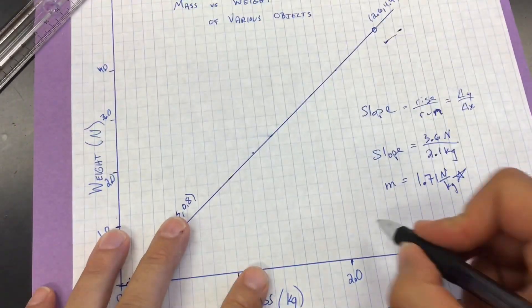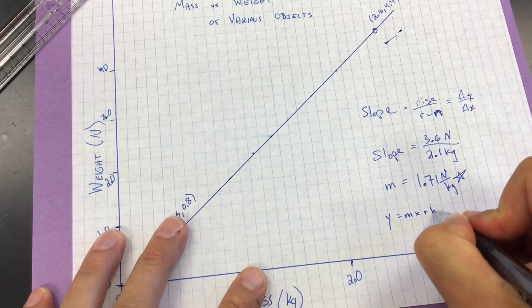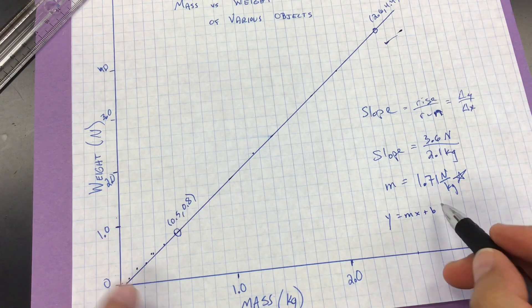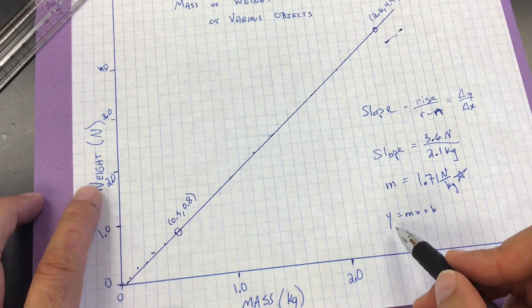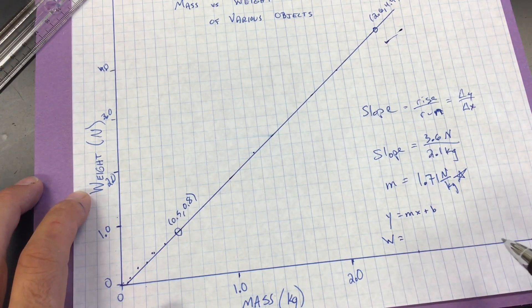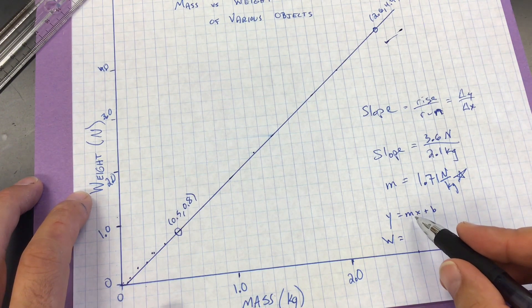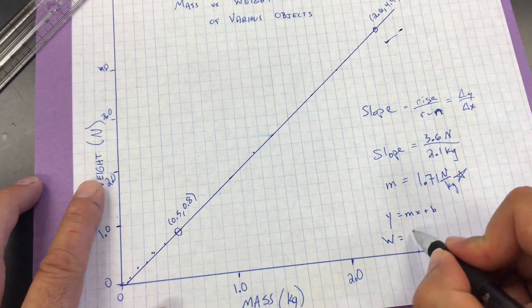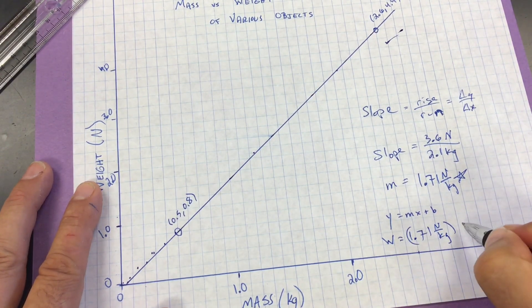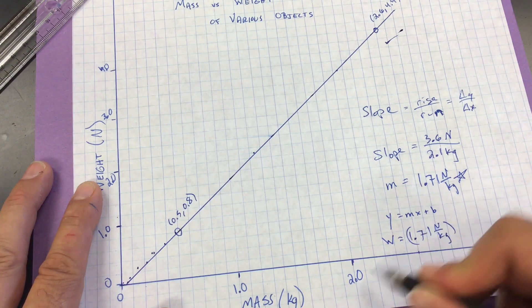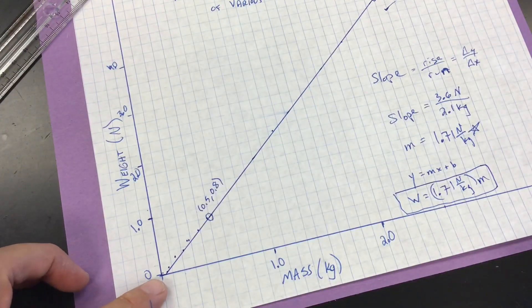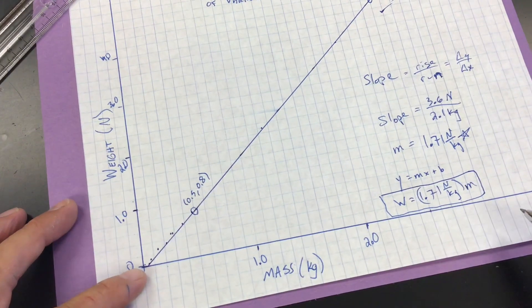Now, using the y equals mx plus b. b is, well, b is pretty much 0. You know it's going to be 0. So we're just going to kind of ignore that. And the y, what's on the y-axis? It's weight. Weight is equal to slope. It's not mass. Slope is 1.71. 1.71 newtons per kilogram. Multiplied by the, what's on the x-axis? The mass. Mass. So here is your equation. Again, ignoring the very small y-intercept. Assuming that it is 0. With better data on a computer, you'll probably get that.